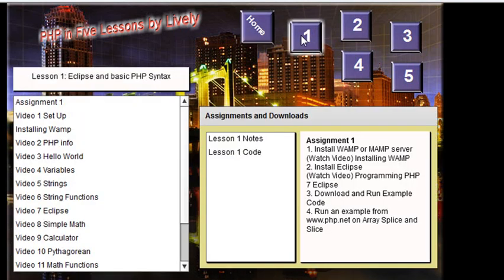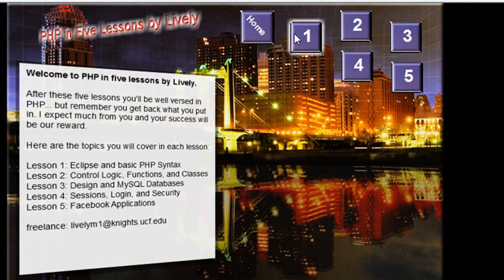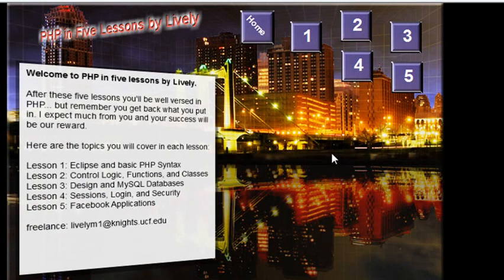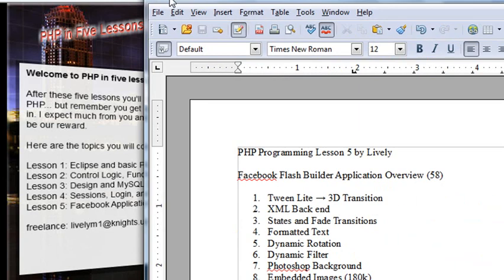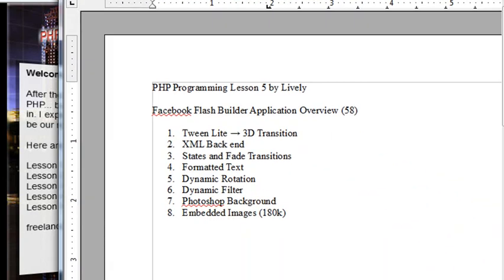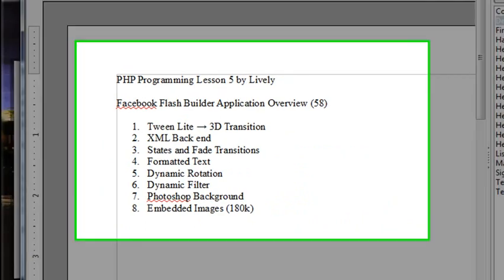We're going to show you how to hand-code that Flash Catalyst — the wonderful classes we're going to be using. The rotations themselves are dynamic. These are not images that have been rotated in Photoshop and pasted in. These are actually dynamically rotated containers. It looks very simple, but a lot of stuff here you're not going to find anywhere else on the web.